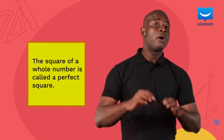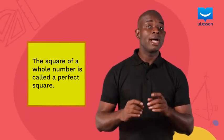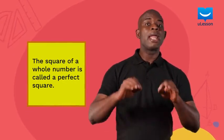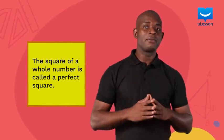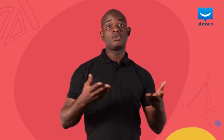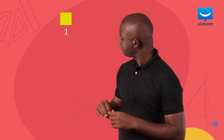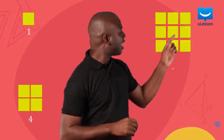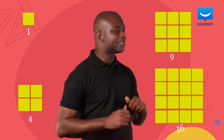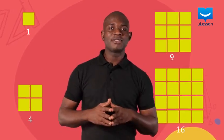The square of a whole number is called a perfect square. So, 1, 4, 9, and 16 are all perfect squares. So, what is the relationship between this and this?